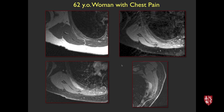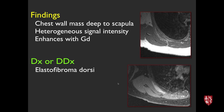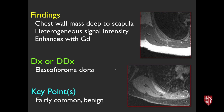62-year-old woman with chest pain. There's a lesion deep to the scapula with contrast enhancement and fatty streaks on cross-sectional imaging. This is elastofibroma dorsi — a benign lesion probably related to chronic friction, containing elastin. It tends to occur in older female patients and can have fatty elements with streaks on imaging.